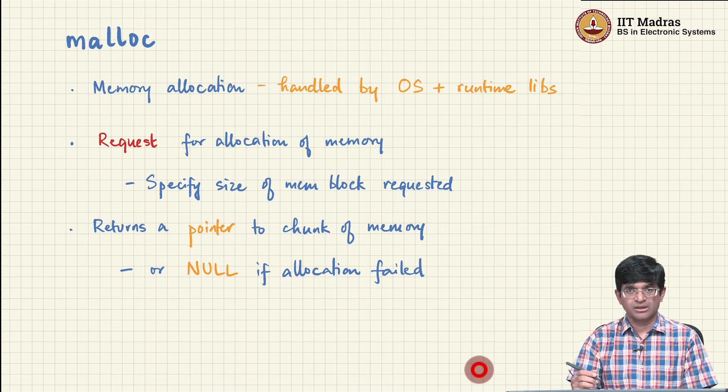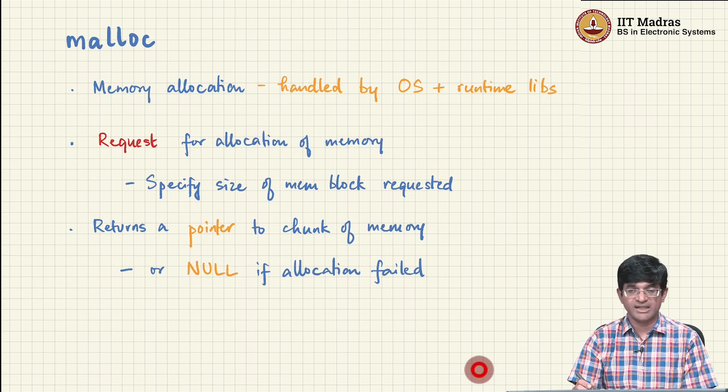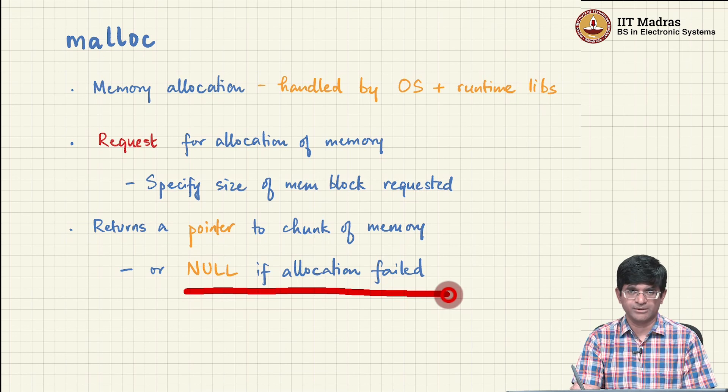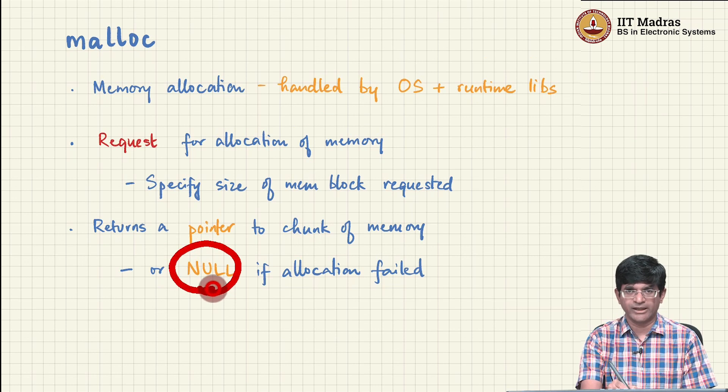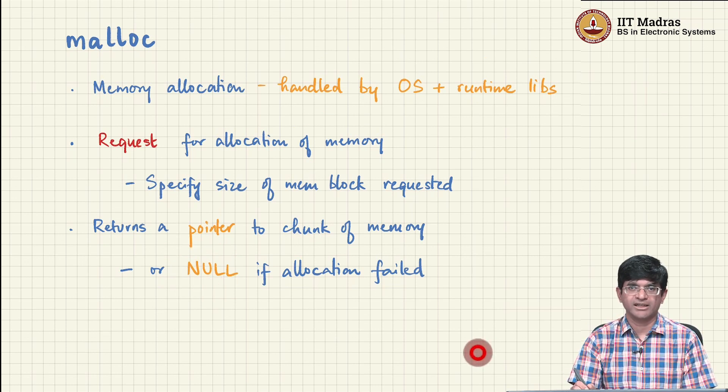So, if you ask for something like 40 terabytes of memory and your system does not have that kind of RAM, what will happen? The memory allocation will fail and the malloc function will essentially return a null pointer. When memory allocation fails you get back a null pointer, meaning that the system was unable to allocate the memory that you requested.